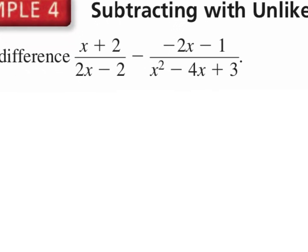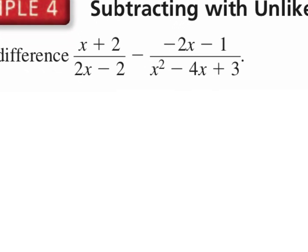Now we're doing the same process but subtracting. First, find the least common denominator. Factor 2x minus 2 by taking out the GCF of 2, leaving x minus 1. For the second denominator, two factors of 3 that add to negative 4 are negative 3 and negative 1, so it factors into (x minus 3)(x minus 1).